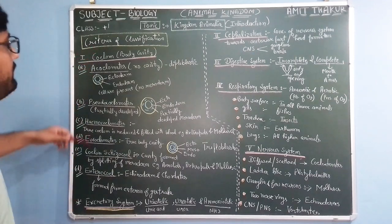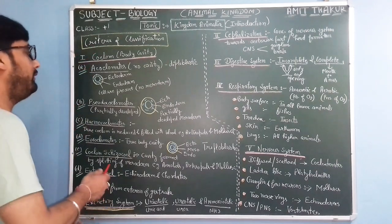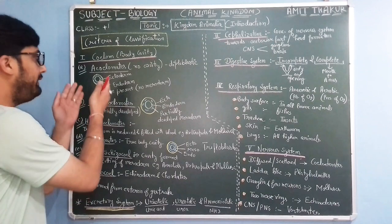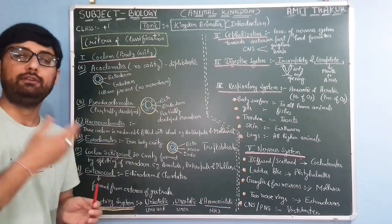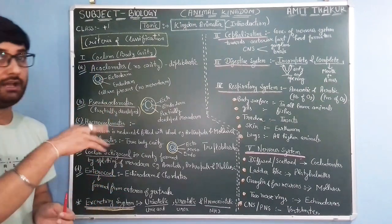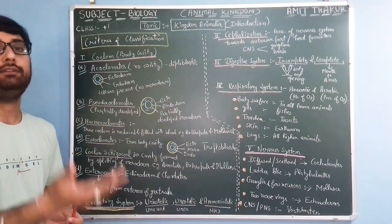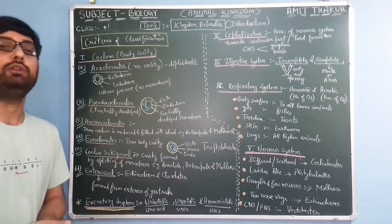So it's all about coelom — coelomic cavities on the basis of presence of body cavity: acoelomates with no cavity, pseudocoelomates with a partially developed cavity, and coelomates with a true body cavity.